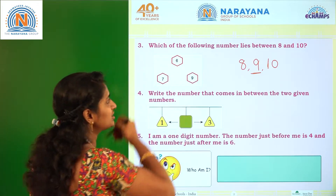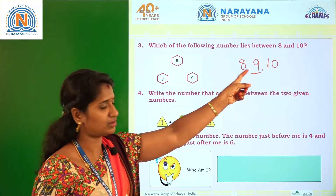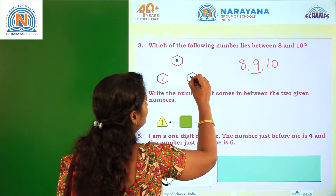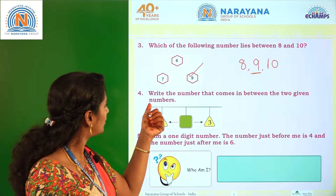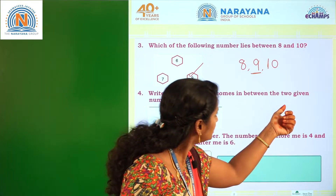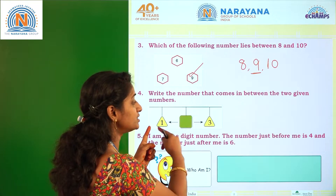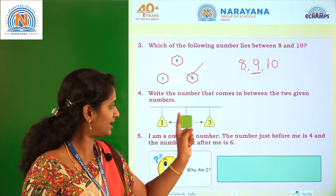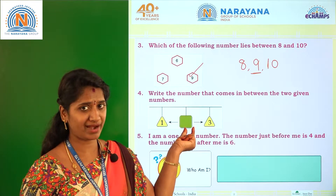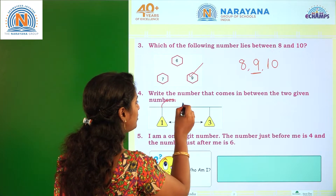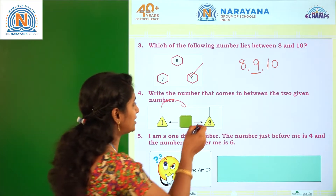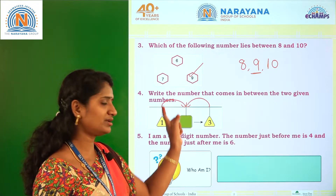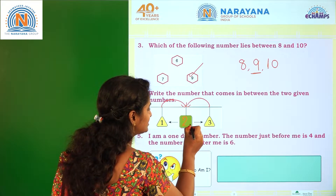You have to choose which option is correct. Is it 6? No. Is it 7? No. The between number here is 9, so pick the correct option. Next, write the number that comes between the 2 given numbers: 1 and 3. The number after 1 is 2, and the number before 3 is also 2 — both are the same. So the between number of 1 and 3 is 2.